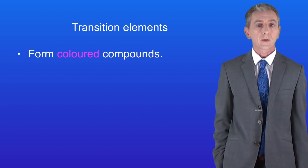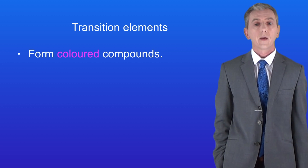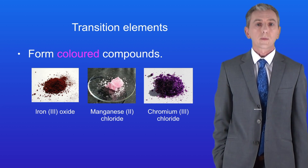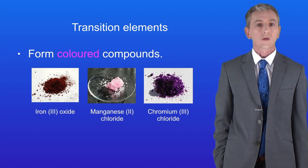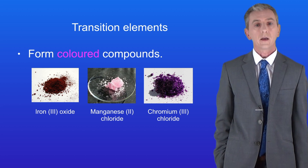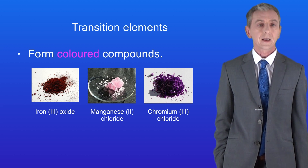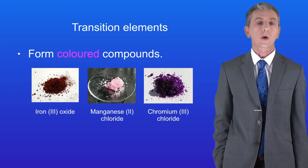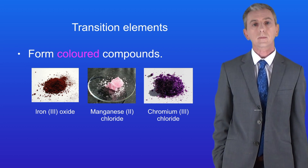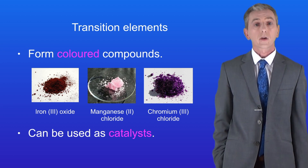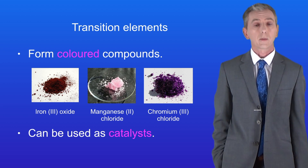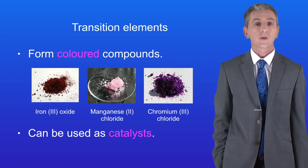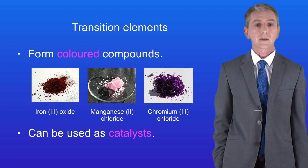Transition elements form coloured compounds and that's really important. Iron oxide is a reddish colour, manganese chloride is pink, and chromium chloride is purple. Finally, transition elements can be used as catalysts and we'll see several examples of that in later videos.